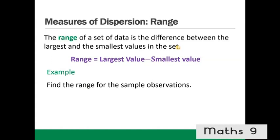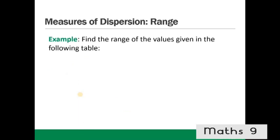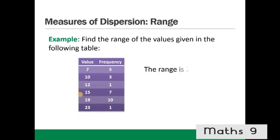Example: find the range for these sample observations. The range = largest value (25) − smallest value (11) = 14. Another example using a frequency table: range = largest value (23) − smallest value (7) = 16.